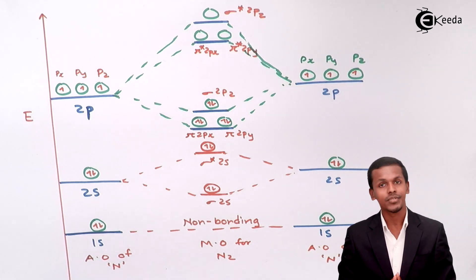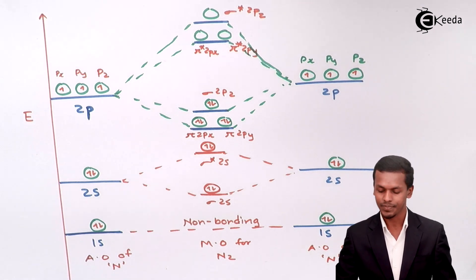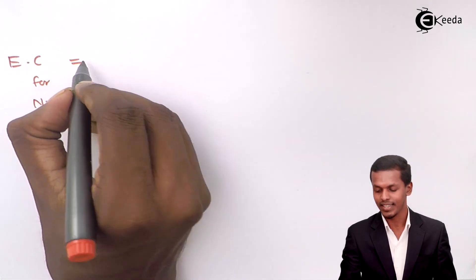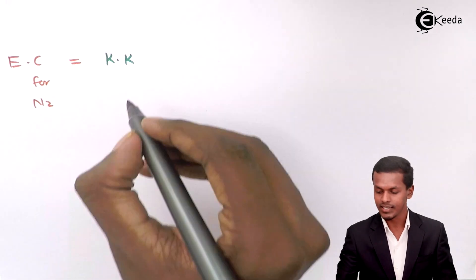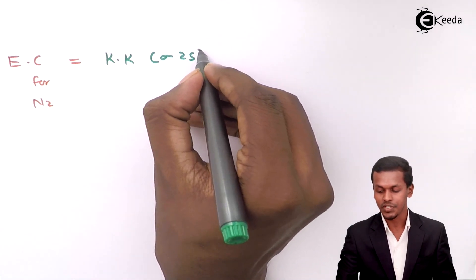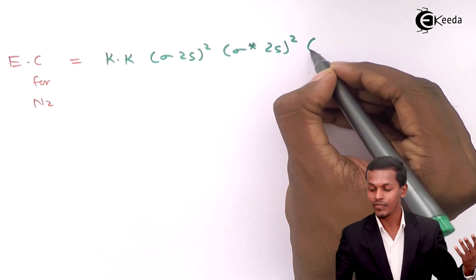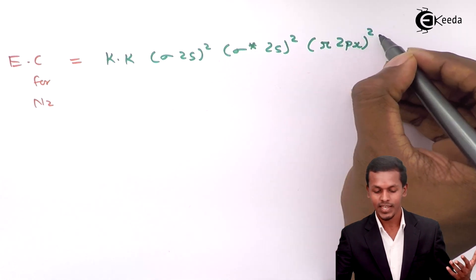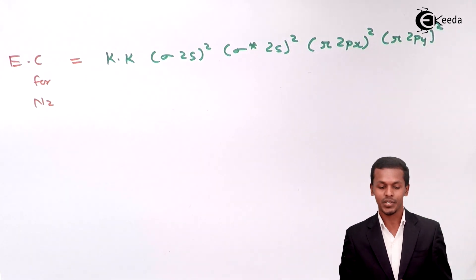So now how can we represent the electronic configuration of the nitrogen molecule? The electronic configuration of the nitrogen molecule can be written as: KK, sigma 2s² , sigma* 2s², pi 2px², pi 2py², sigma 2pz². This is what we have represented here.